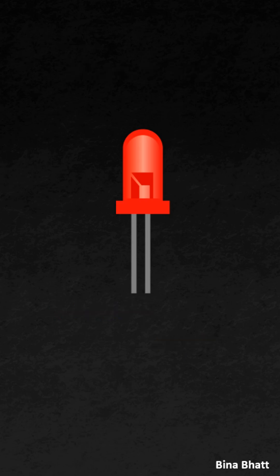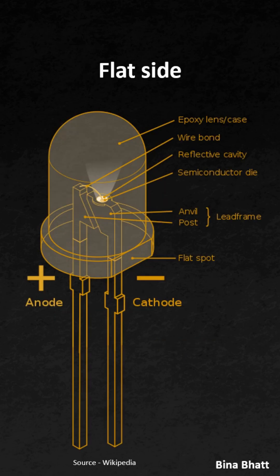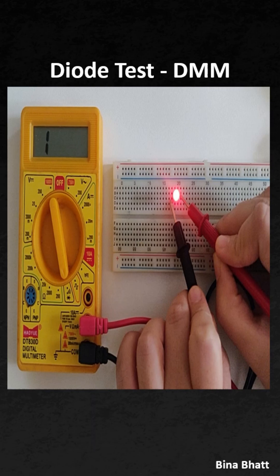If for some reason both leads are chopped, you can try another method: check the flat side on the LED's plastic casing. As shown here, the lead on that side is the cathode.